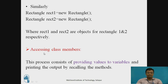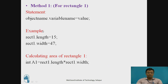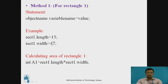Accessing the class members means providing values for the variables. The general code is: object name dot variable name = value. For example, for rectangle one: rect1.length = 15 and rect1.width = 47, where rect1 is the object name, length and width are the variables, and 15 and 47 are the respective values.